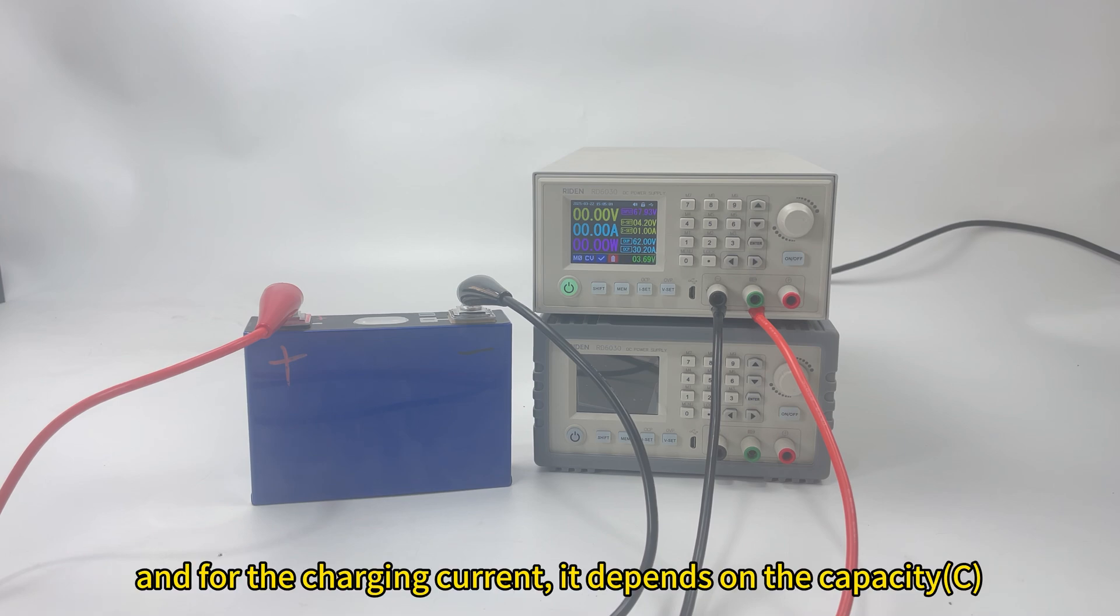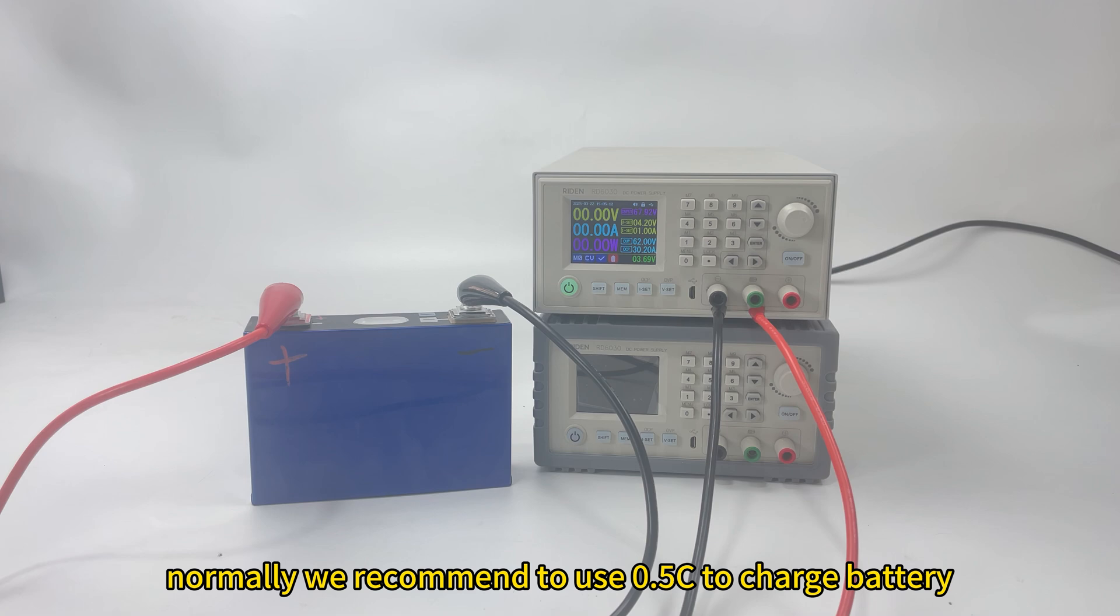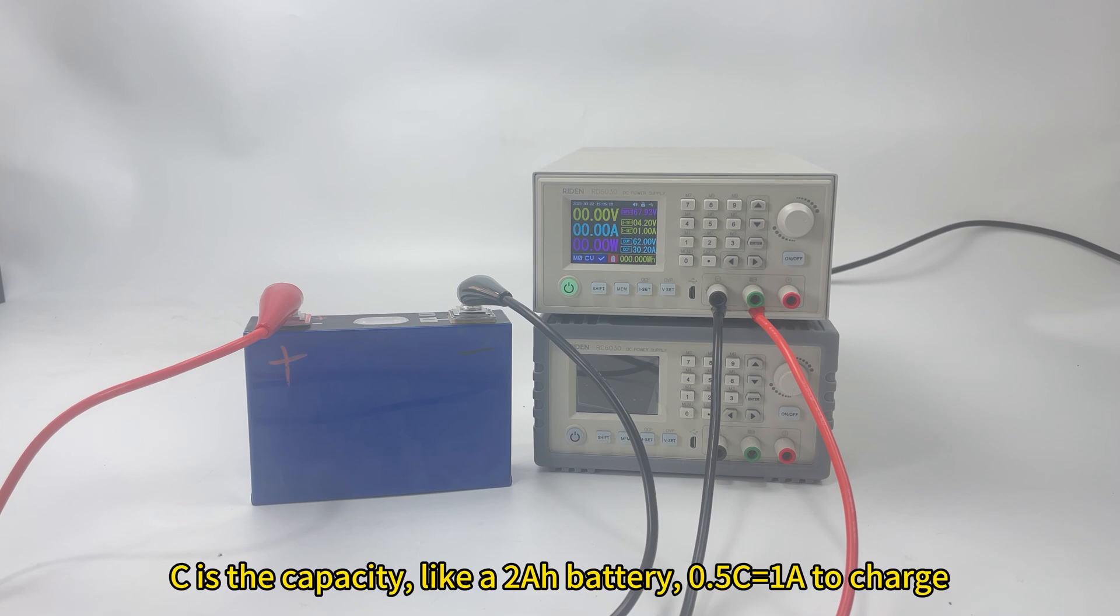And for the charging current, it depends on the battery capacity. Normally, we recommend to use it under half C of the battery. Normally, the C means the capacity of the battery.